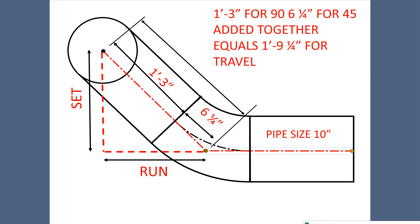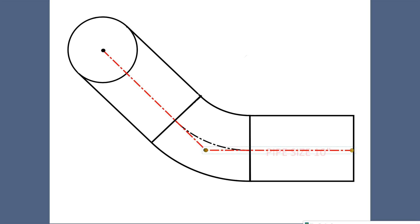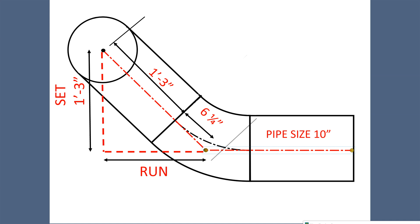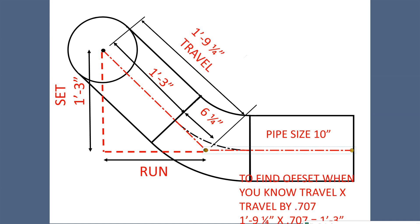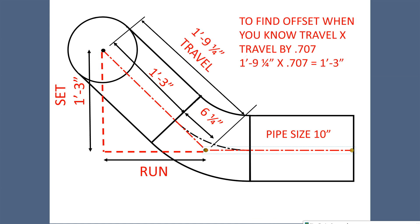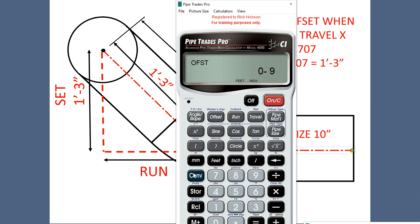Now how do we come up with the offset? So we can take the one foot nine and a quarter. And what do we do with it? We can times that by .707. So, one foot nine inch one quarter times point 707.